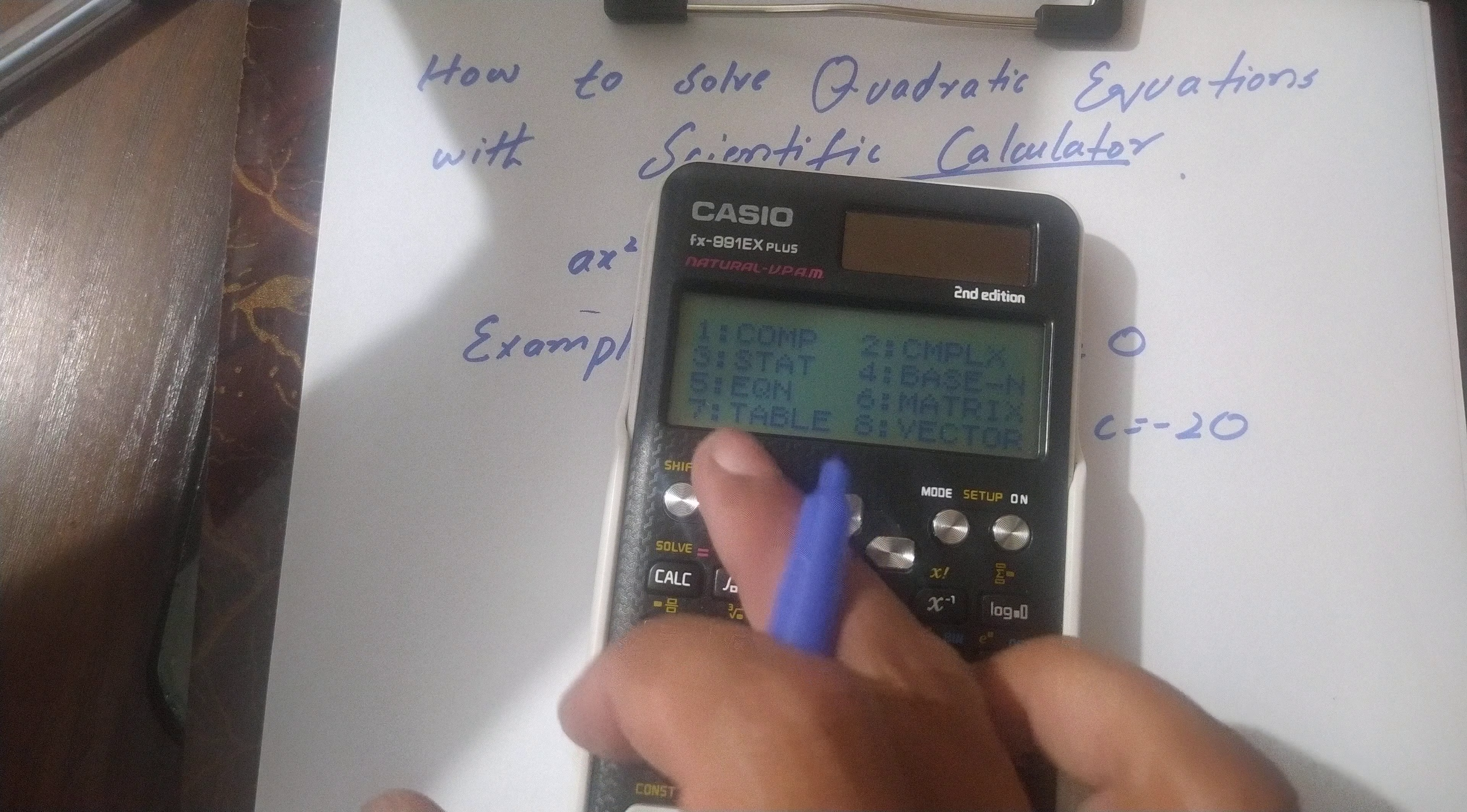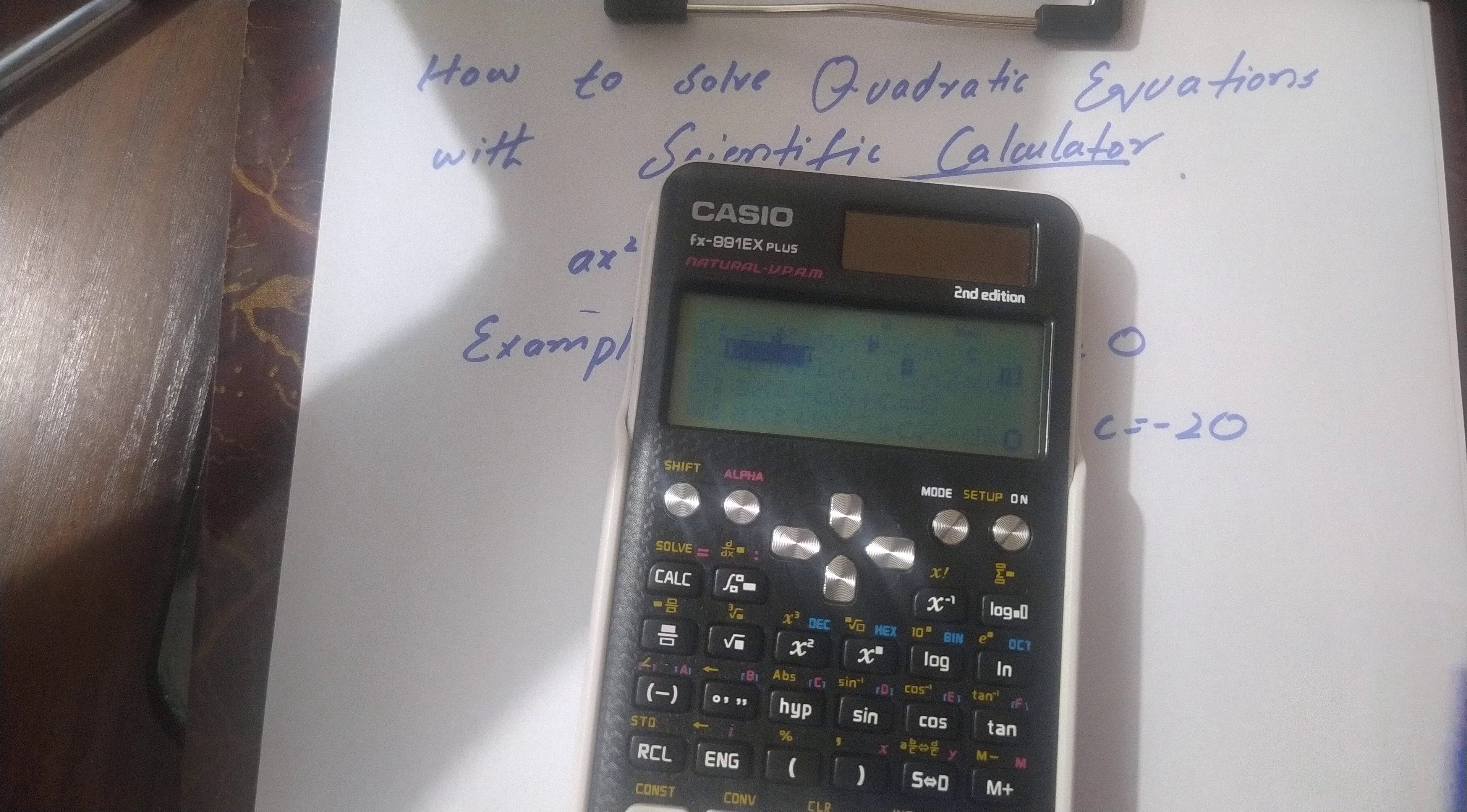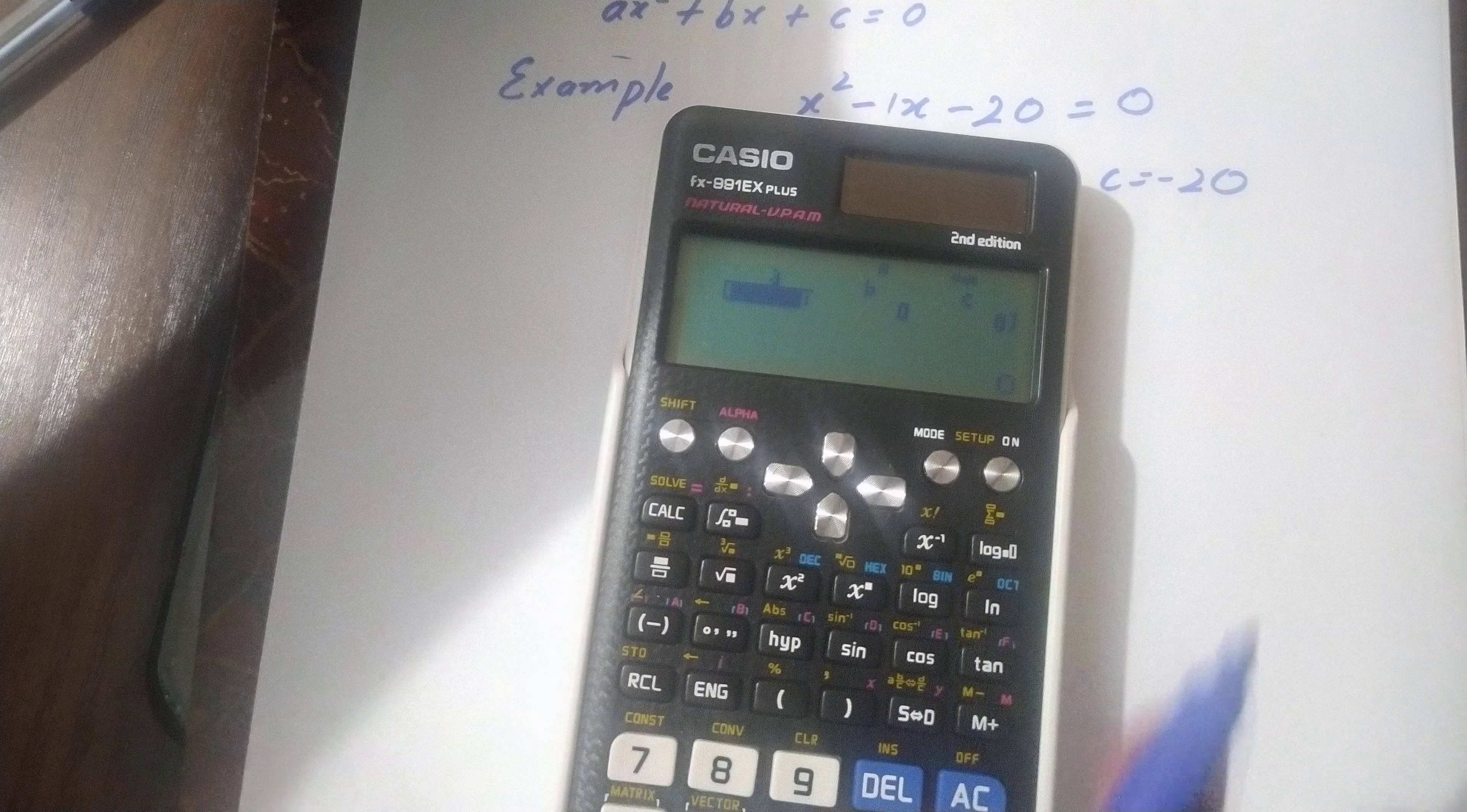Press the mode button, then select option 3. You'll see the ABC option for quadratic equations.